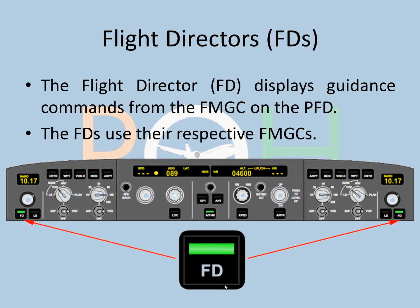That's the basics of Autopilot. Let's talk about Flight Directors. Flight Directors are located on the FCU — these are the buttons here, the FD switch. The Flight Director displays guidance commands from the FMGC on the PFD. It uses its respective FMGC: FD1 on the left side uses FMGC1, and FD2 uses FMGC2, though both are continuously talking to each other and verifying their outputs and inputs.